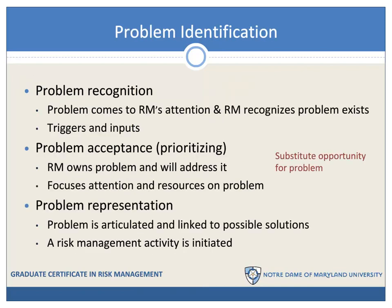Problem identification is perhaps the most important part of the risk management process. Certainly it is early in the process, and most organizations don't spend enough time working on this particular task. Problem identification, as defined here, has three steps. First, there's problem recognition — we have to be aware that a problem exists. The problem must come to the risk manager's attention and the risk manager has to recognize that this problem exists.